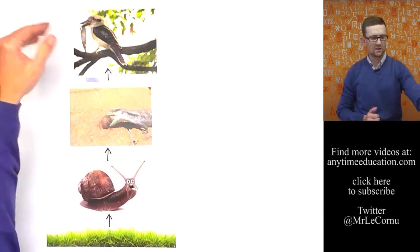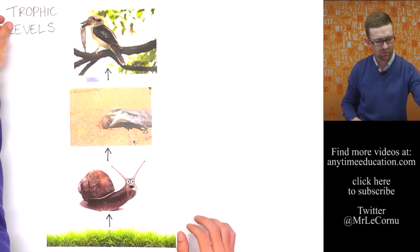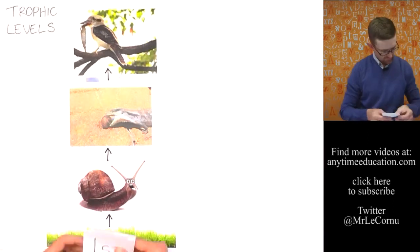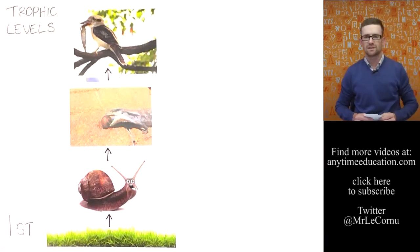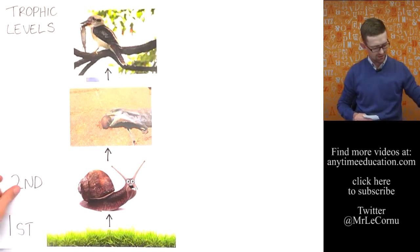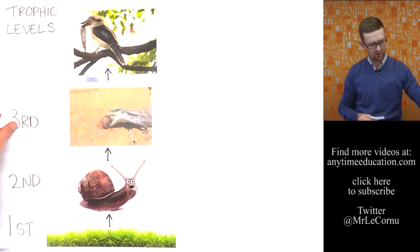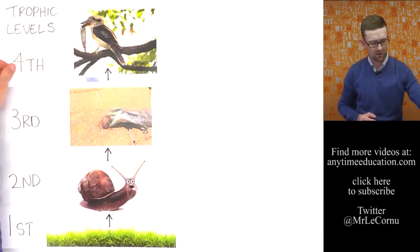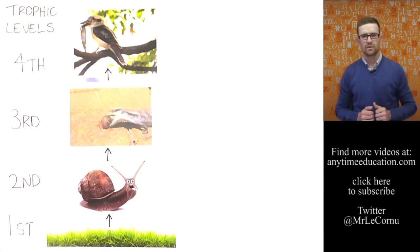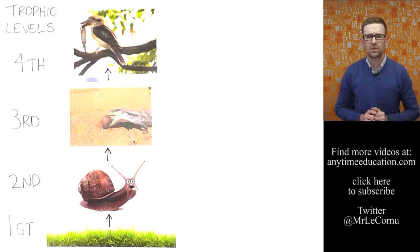And in food chains we have different feeding levels. We call them trophic levels. So we have the first trophic level is the grass in this case. The second trophic level is the snail. The third trophic level is the lizard. And the fourth trophic level is the kookaburra in this example. So we call them trophic levels and the other way to think of them is feeding levels.